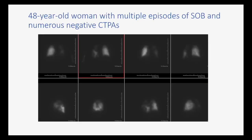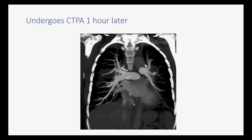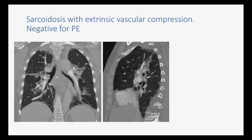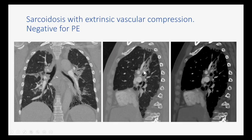Here's a patient who had a normal perfusion scan — I'm just showing the ventilation scan showing multiple defects. In fact, this was high probability. The patient underwent a CT scan a few days later, and you can see the pulmonary arteries look pretty good. This patient had a completely normal CT study. The reason for the positive VQ scan was actually vascular compression due to perihilar fibrotic change and conglomerate lymphadenopathy. This patient had sarcoid — you can see some of the vessels are narrowed and pinched off.